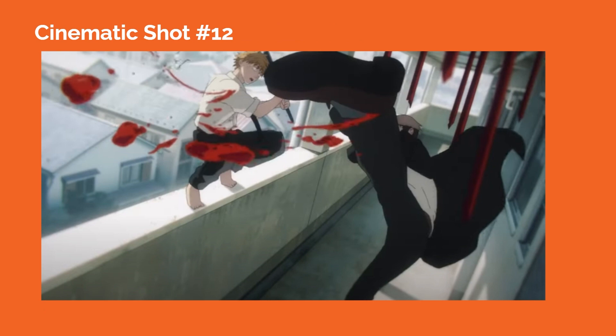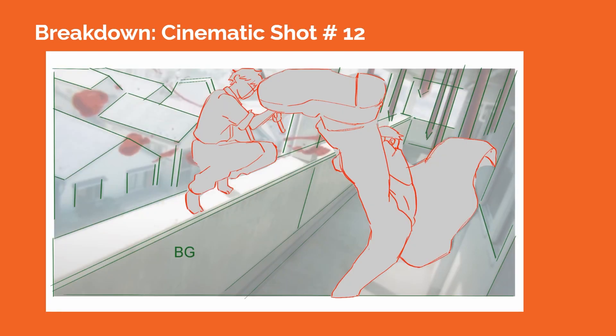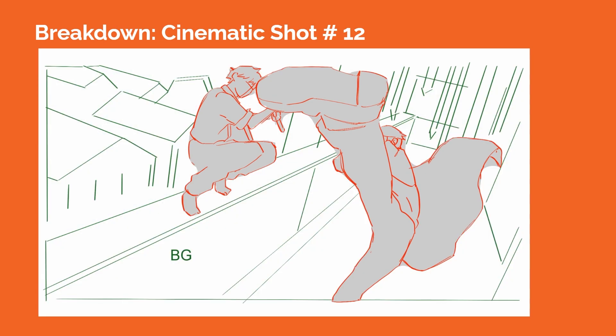In cinematic shot number 12, the camera is placed higher above ground, closer to the ceiling, as Kishibe swings around to kick at Denji, who is trying to attack him. We see some of the blood spears dropping from the ceiling and are slightly out of focus, acting as foreground elements. The camera is also tilted at a Dutch angle, showing the ground plane of the walkway along with a stream of blood drops floating slowly through the air, conveying the motion from Kishibe's kick.